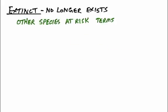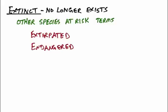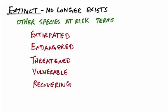When talking about species at risk, there are a few important terms. Extirpated means the animal has been removed from a certain part of its habitat and is no longer found there, but is found in other places. Endangered means at risk of becoming extinct or extirpated. A threatened species is one we're worried about, but not as seriously as an endangered one. Lower risk is called vulnerable, and a positive category is recovering.